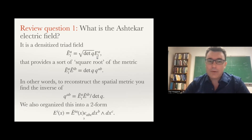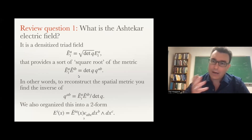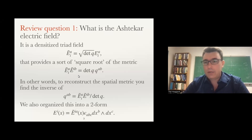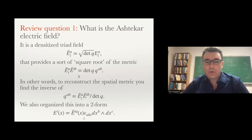To remind you of my notation: q is the spatial metric, q without indices is the determinant, and e is the triad variable. The triad connects the coordinate frame with a local Lorentz frame. This is the sense in which it's a square root — if you take e-tilde with e-tilde and contract the internal i-index, you get the spatial metric back with a factor of the determinant. You can use this to construct the inverse spatial metric. What we decided to do was organize this electric field into a two-form — the electric two-form.